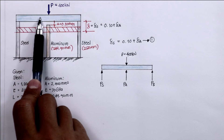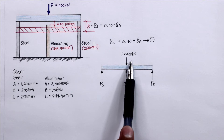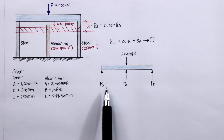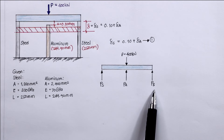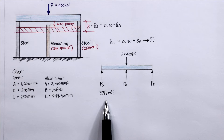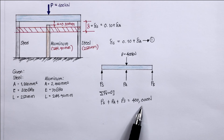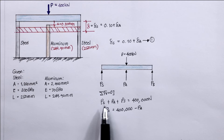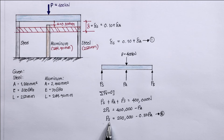Taking the free body diagram of the rigid platform, the forces acting on it are the applied force of 400 kN, the reacting forces from the two steel bars (PS each), and the reaction from the aluminum bar (PA). Summing all vertical forces equal to zero: PS + PA + PS = 400,000 N, so 2PS + PA = 400,000 N. Rearranging: 2PS = 400,000 − PA. Dividing both sides by 2: PS = 200,000 − 0.50 PA. This becomes Equation 2.